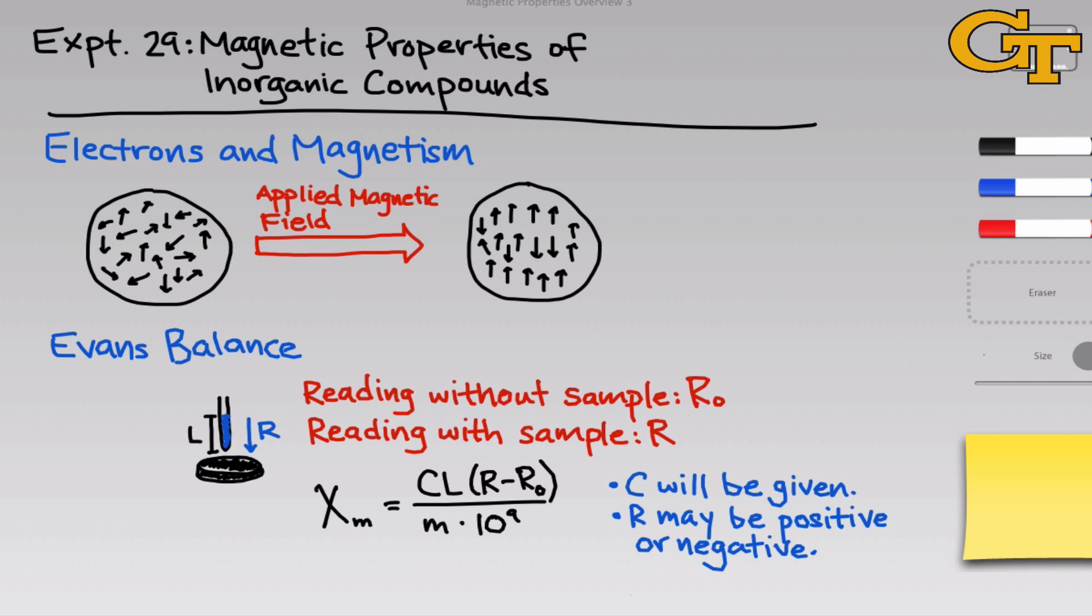Note that R may be either positive or negative. For a diamagnetic material that contains no unpaired electrons, there will be a slight repulsion, so the reading will show up negative. When R is positive, that means there's an attraction between the sample and the magnet, so we end up with positive magnetic susceptibility. In cases when the R value is negative, you can essentially chalk that up to the material being completely diamagnetic and ignore the resulting magnetic susceptibility.